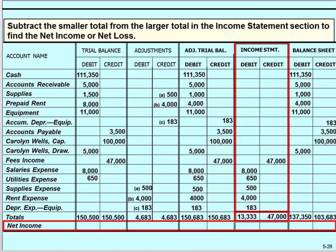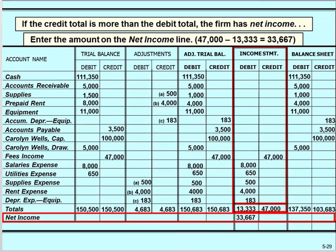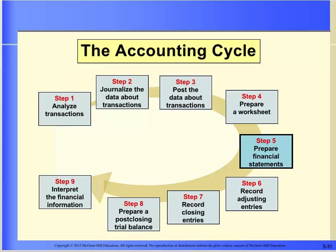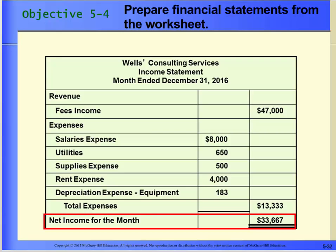Focus on the income statement section and subtract the smaller column total from the larger column total. The difference is considered net income or net loss. For Wells Consulting Services, they had $33,667 of net income for the period. Place this amount in the debit column so that both income statement columns balance. Place the same amount of $33,667 in the credit column of the balance sheet section — after doing this, both columns of the balance sheet section will also balance, effectively adding net income to the owner's capital account on the credit side.